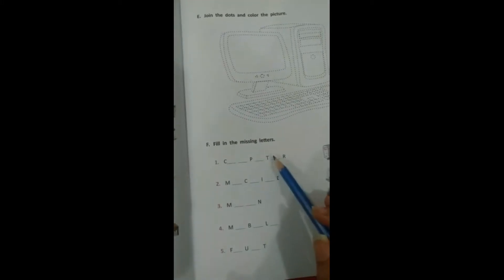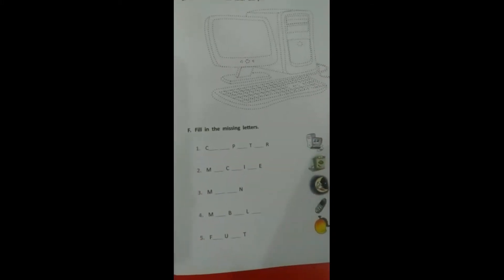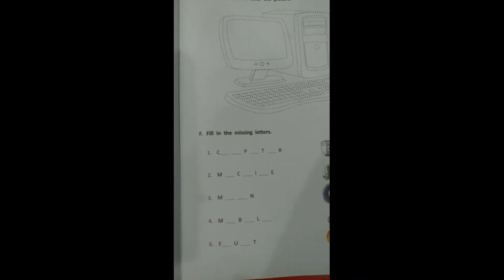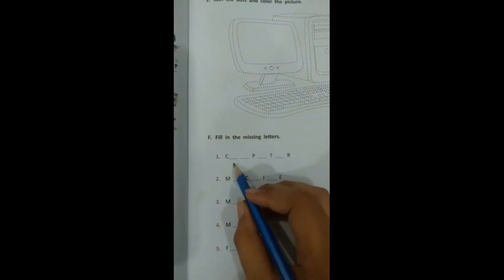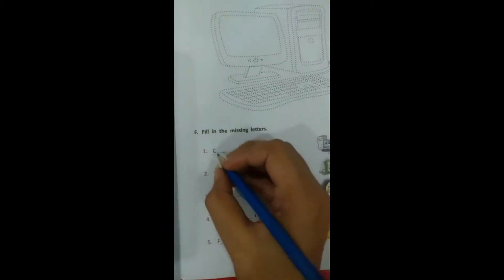Fill in the missing letters. Here you have some letters given and some missing. Look at the pictures. Which picture is number one? Computer. Here you have number one with C.